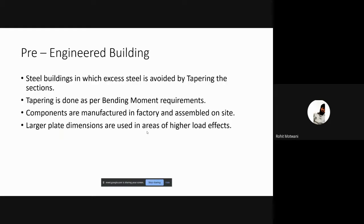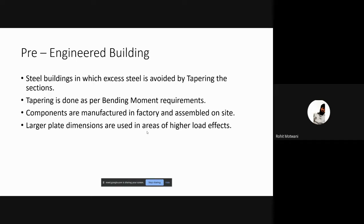The basic aim of this project is based on the pre-engineered building — steel buildings in which excess steel is avoided by tapering the sections. This is a modern technology. Pre-engineered buildings have many advantages: the cost is lower, time consumption is very less compared to rolled steel structures, maintenance is less, and quality control is better than conventional steel buildings.